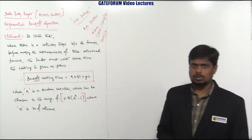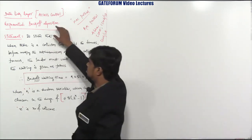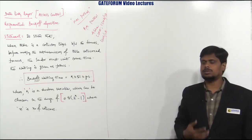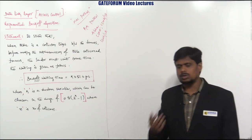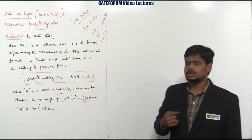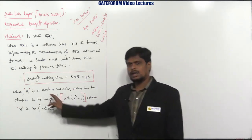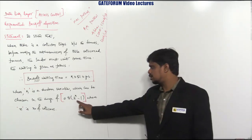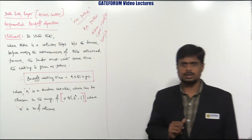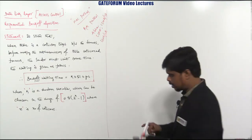In this session we are going to learn about this exponential backoff algorithm. Coming to the exponential backoff algorithm, let us check the statement of this algorithm. When there is a collision between frames — when multiple frames are collided together — before making the retransmission of those collided frames, the sender has to wait some amount of time. That waiting time is given as: backoff waiting time = k × 51.2 microseconds, where k is a random variable chosen in the range 0 to 2^n − 1, and n is the number of collisions.